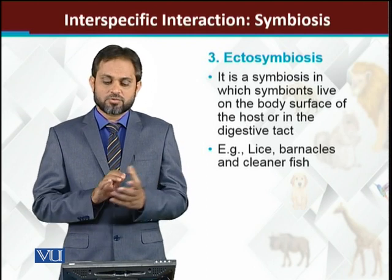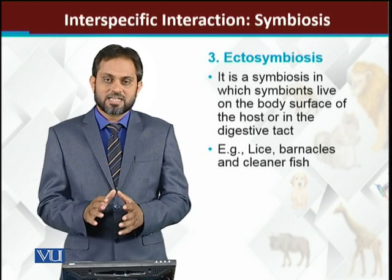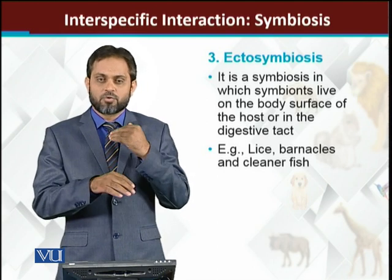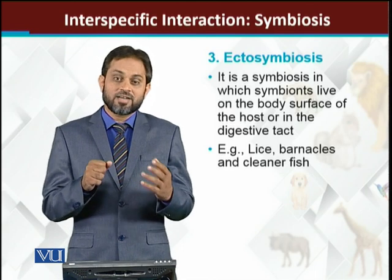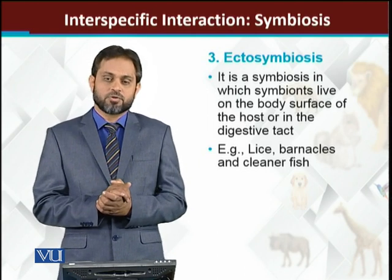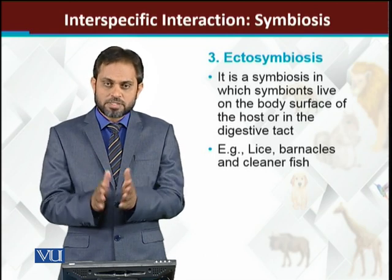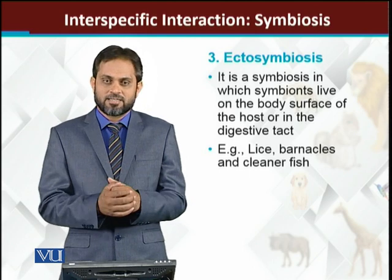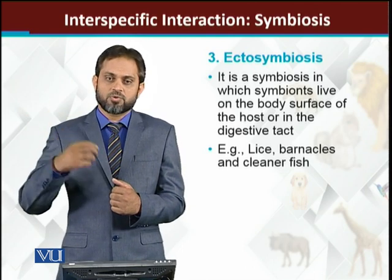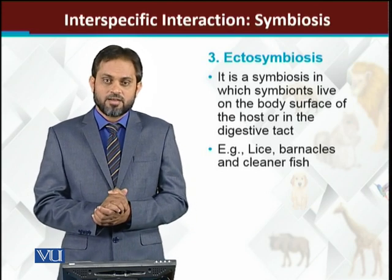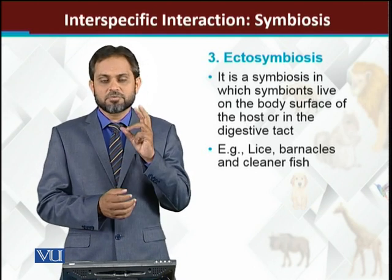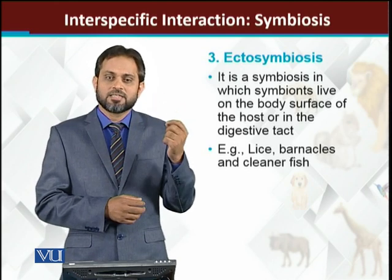Then there are ectosymbionts. Ectosymbiosis is a relationship in which one organism lives on the surface of the other animal. If one animal or organism is living on the surface or on the outer body of the other animal, we say it is ectosymbiosis. For example, lice are parasites that live on the skin surface of the host — so the lice and host relationship is ectoymbiosis. Other examples include barnacles and cleaner fish, which are also ectosymbionts.